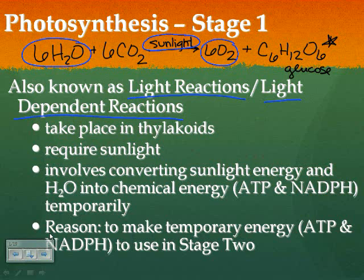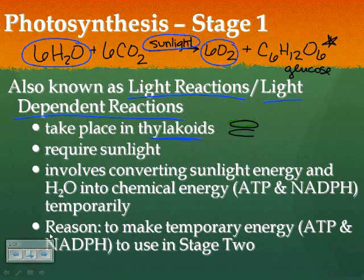We're focusing on the part that requires sunlight. In stage 1, it's going to be taking place in the thylakoids. Anybody remember what thylakoids are? The little flattened disks inside of the chloroplast — that's the site of stage 1 of photosynthesis.